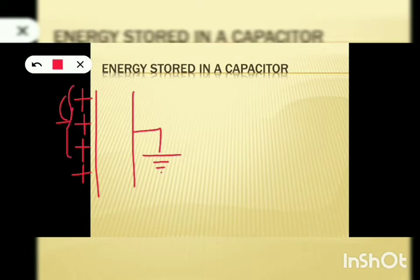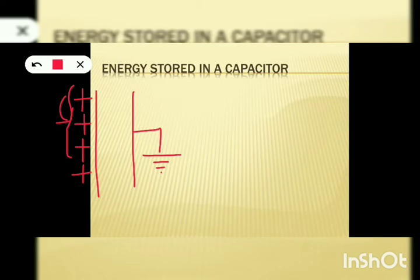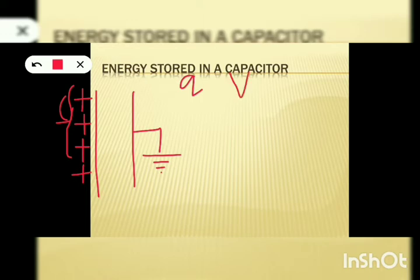So to bring more and more positive charges, we need to apply more and more force — that is, the work done also increases. This work done is stored in the form of energy, and the energy lies in the dielectric medium of the capacitor. Now, suppose the charge stored in the capacitor is Q. As we discussed in our previous session, whenever a charge Q is given to a capacitor, its potential increases. Let the rise in potential as a result of charge Q be capital V.